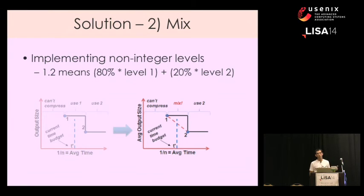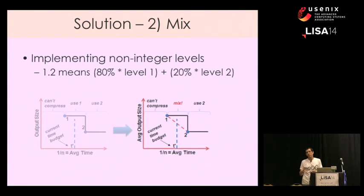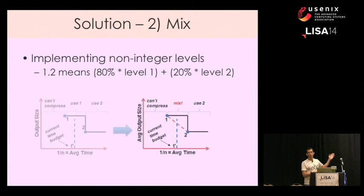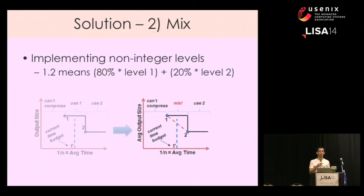Another thing we introduce is the notion of mix. Mix is something we do when we want to compress at level 1 or 2 but aren't sure we can make it to level 2 — maybe level 2 is too much for the available CPU. We want to use something like 1.5, since these are discrete presets that Zlib offers. In our case, 1.5 means we serve some users with level 1 and some with level 2. Level 1.2 means 80% of users get content compressed at level 1. This way we move in baby steps, changing the level by 0.2 every 10 seconds.